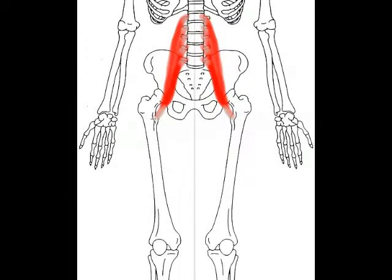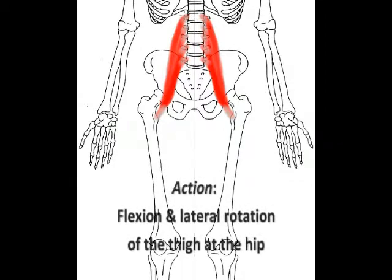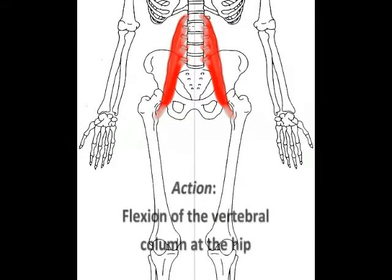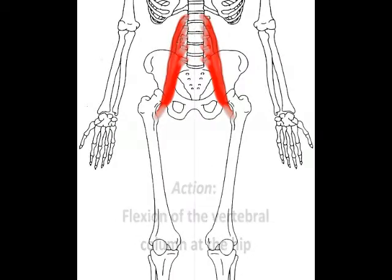Like the iliacus, the psoas major is involved in flexing the thigh at the hip as well as laterally rotating the thigh, and also flexion of the vertebral column at the hip, especially when sitting up from a supine position. This muscle is also the reason why the traditional straight back sit-up has been replaced with the more abdominal crunch or curl, to avoid excess tightening of the psoas major.